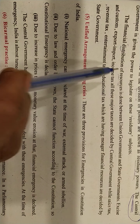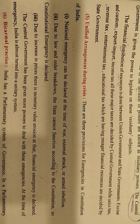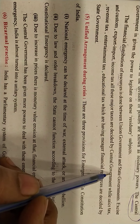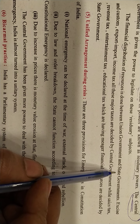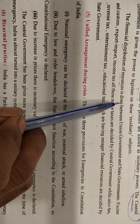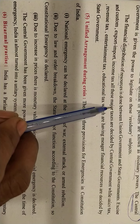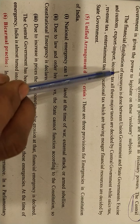The financial distribution of resources is done between the union government and state government. For example, all taxes in India are collected by the central government. Some money is kept with the center — for defense (soldiers' salaries, buying fighter planes) — and remaining resources are distributed to the states, which also need funds for roads, schools, etc.